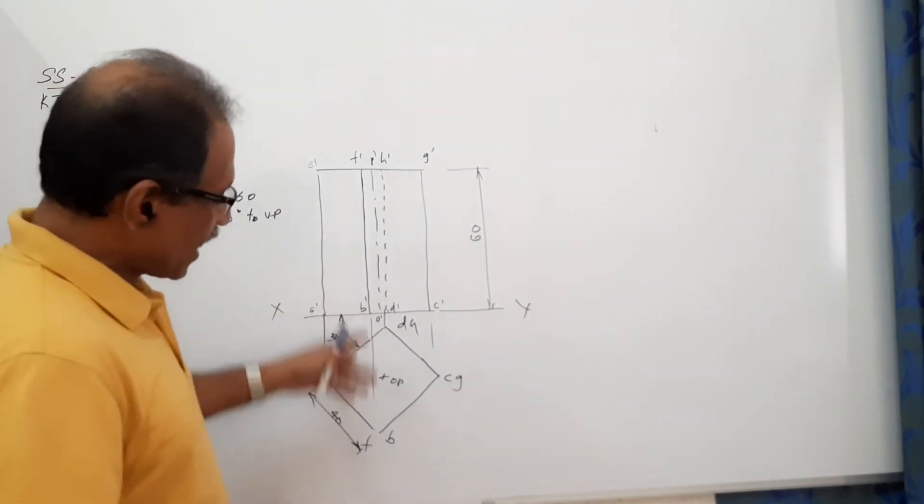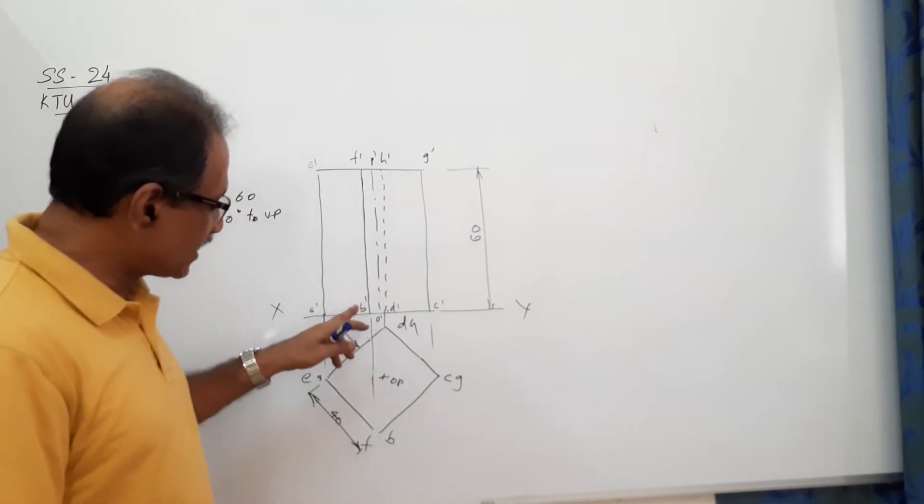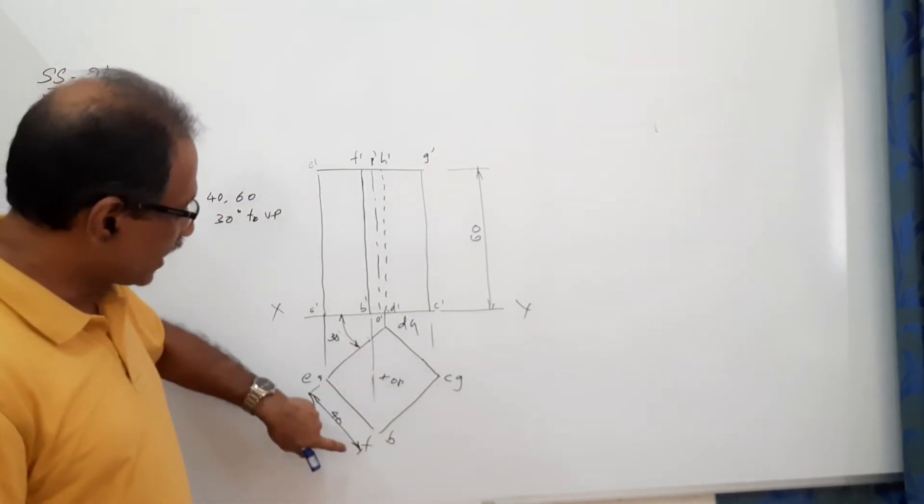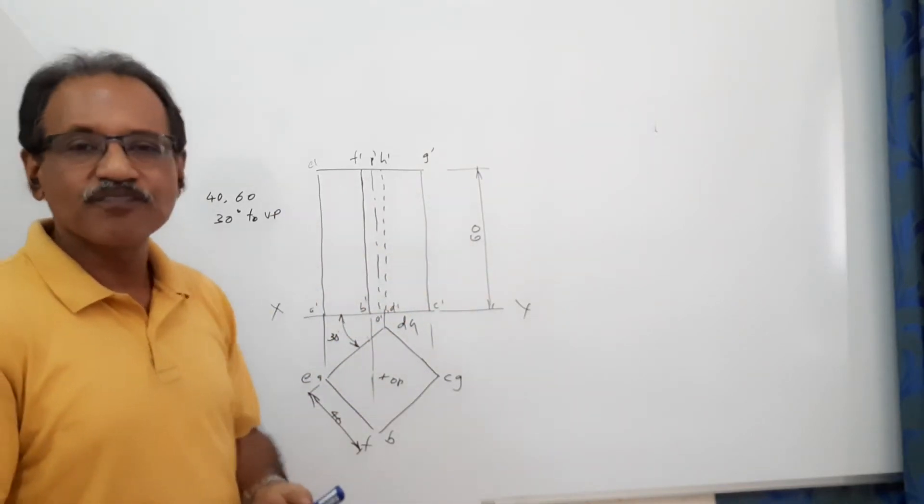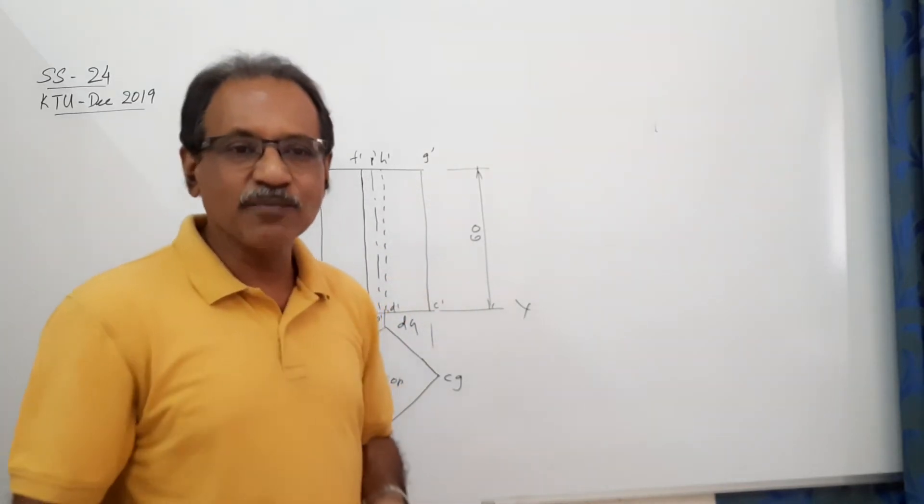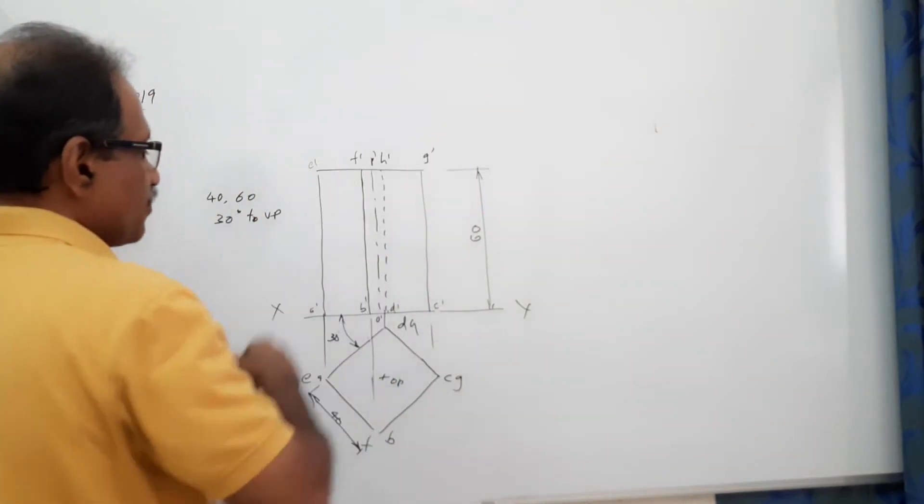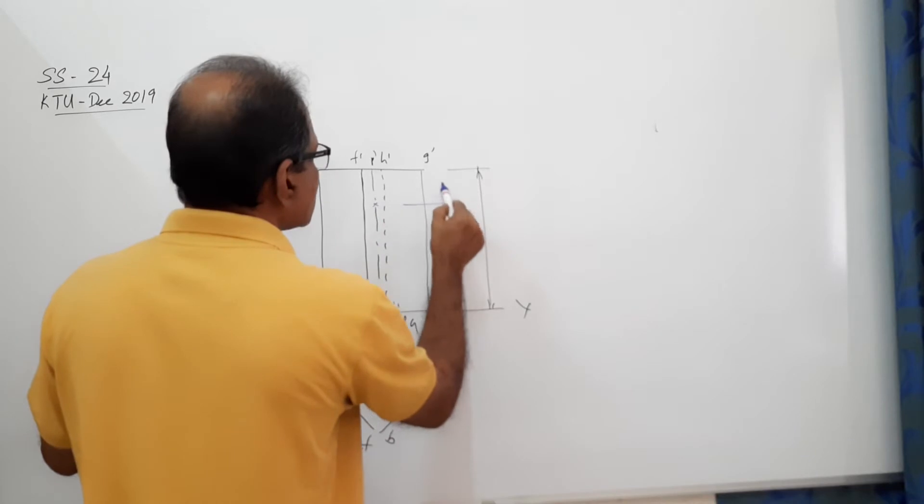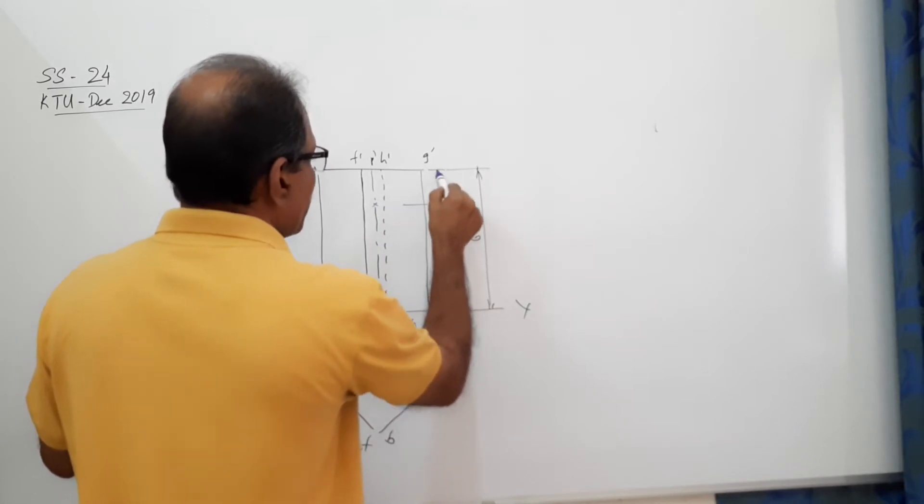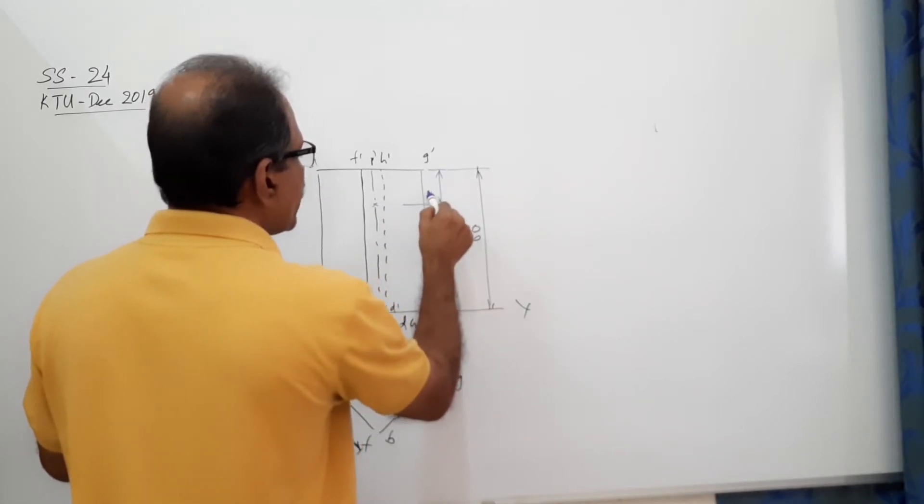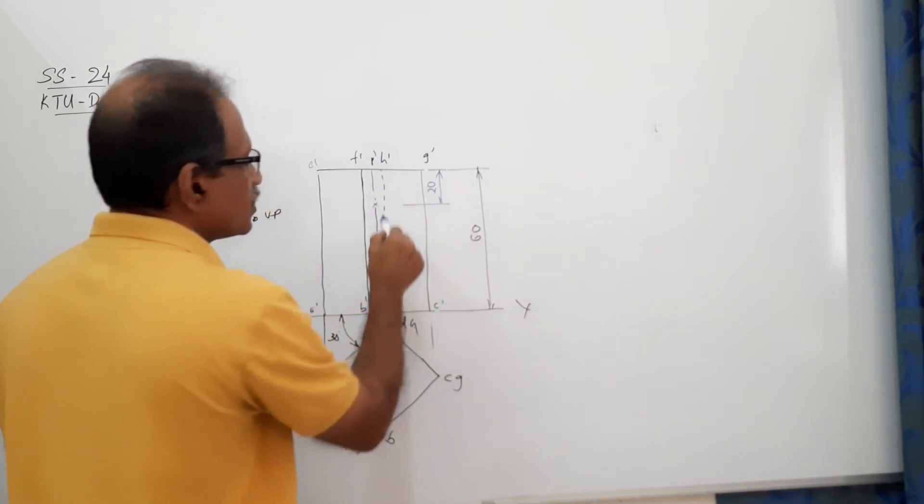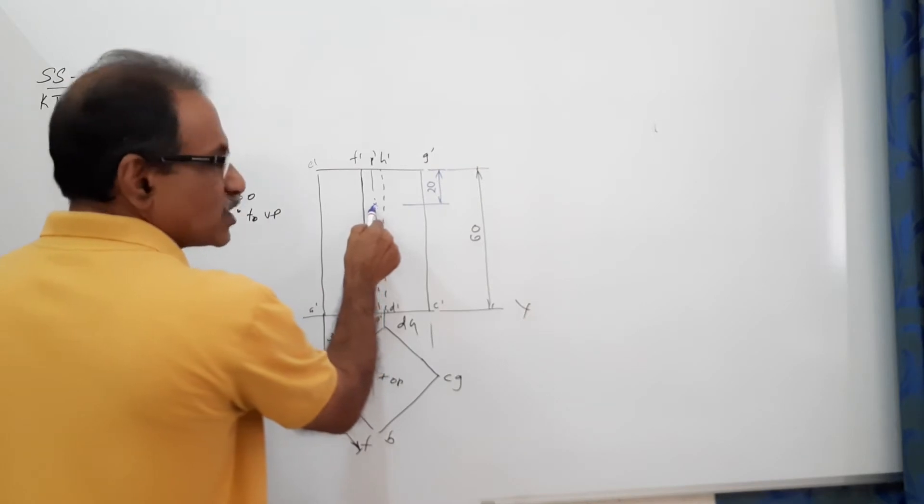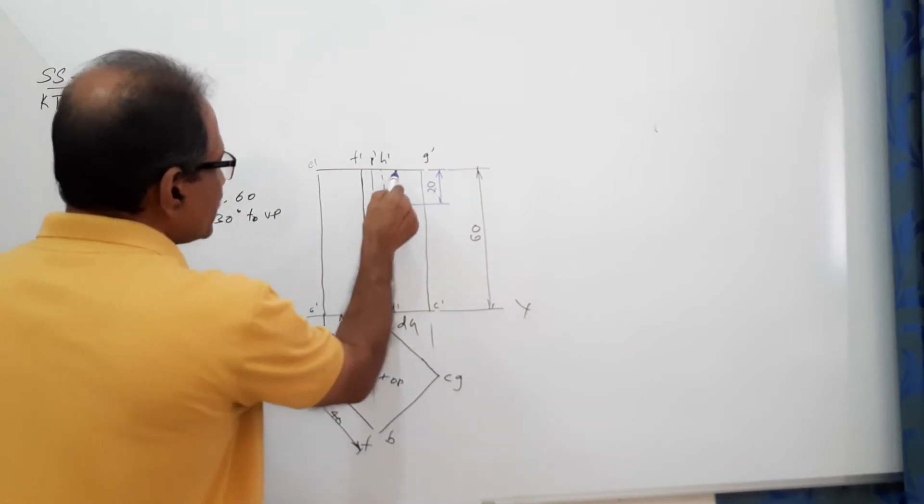I have drawn the plan and elevation of the square prism resting on HP on edge space with a side of base making 30 degrees to VP. Dimensions: 40mm side, height 60mm. This is cut by a cutting plane perpendicular to VP and inclined to HP, passing through a point on the axis 20mm below the top. The cutting plane should make 45 degrees to HP, that means 45 degrees to the X-axis. This is the cutting plane.